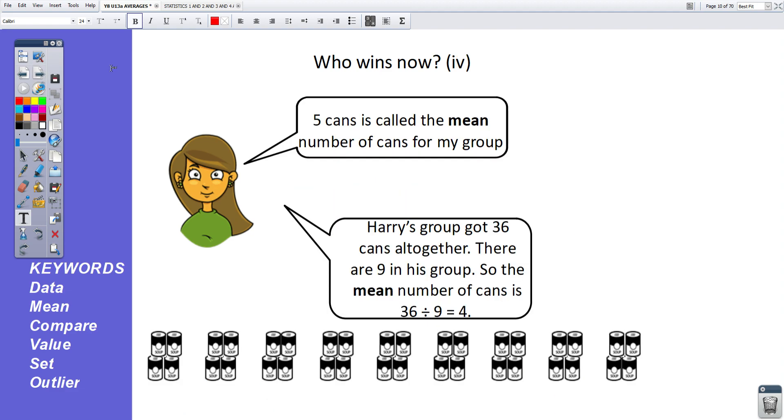So in Lucy's group of six people, where they collected 30 cans, each person collected a mean of five cans. This is where the idea of the mean comes into it. The mean equals five. So five cans is called the mean number of cans for her group. Harry's group got 36 cans altogether. So even though they got more cans, there were nine people in his group. And the mean number of cans for his group is 36 divided by those nine people, which equals four.